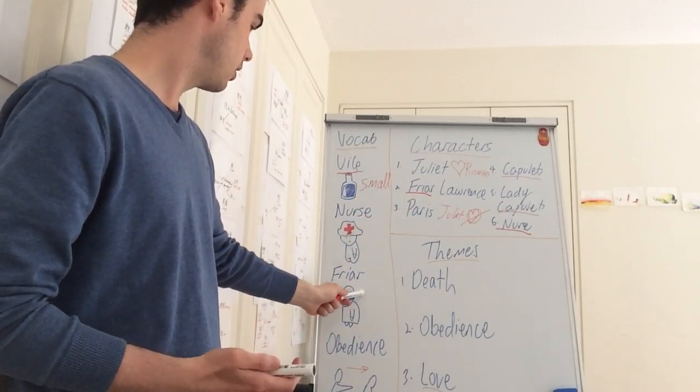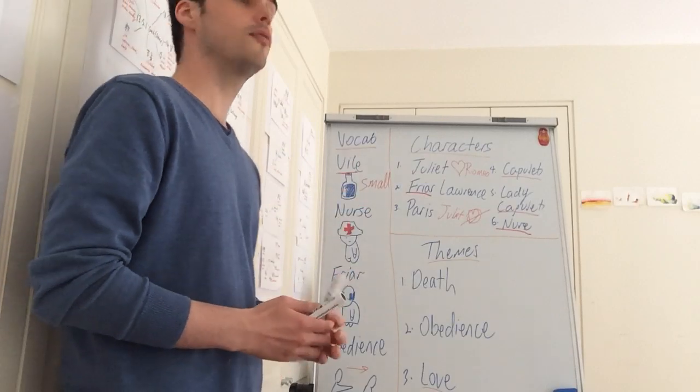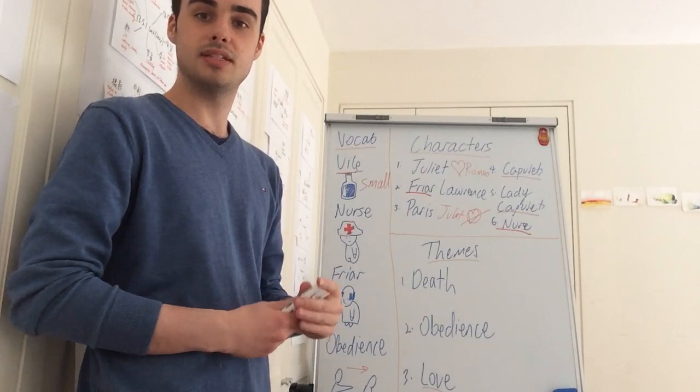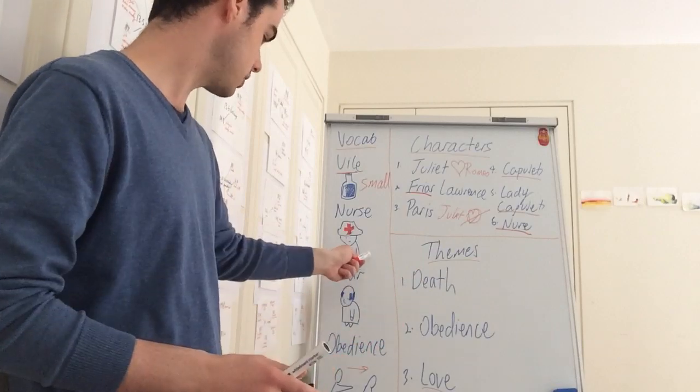So Friar Lawrence, right here, gave Juliet a vial full of this medicine or a potion that would make Juliet seem dead. Fake death. Next, we move on to nurse.